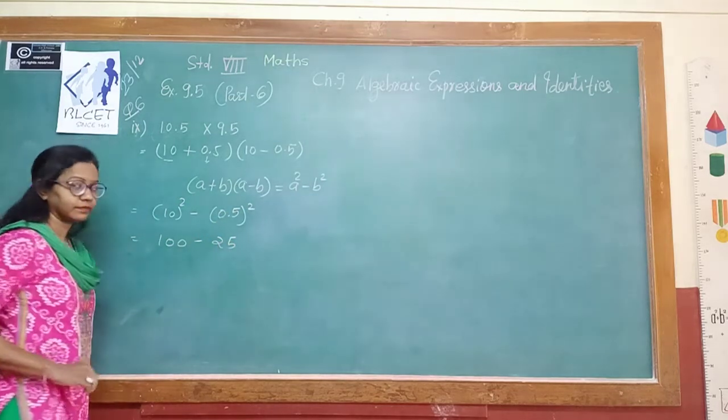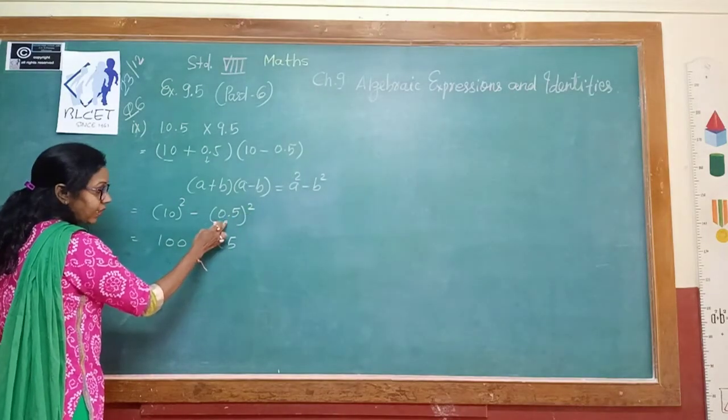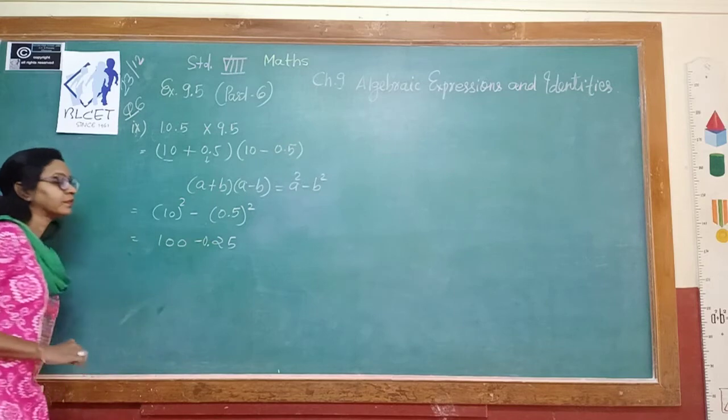25. But 5 squared is 25, and we have a decimal point. So it is 0.25.